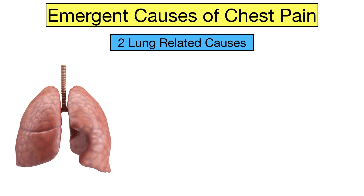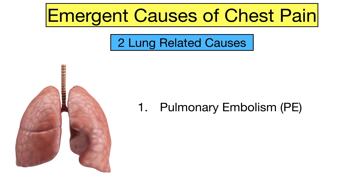Next we have the lungs, and there are two lung-related emergencies that can cause chest pain. The first one is pulmonary embolism or PE, which is a blockage in the arteries in the lungs, and the second one is a pneumothorax, which is a collapsed lung. So the two lung-related causes are PE and pneumothorax.